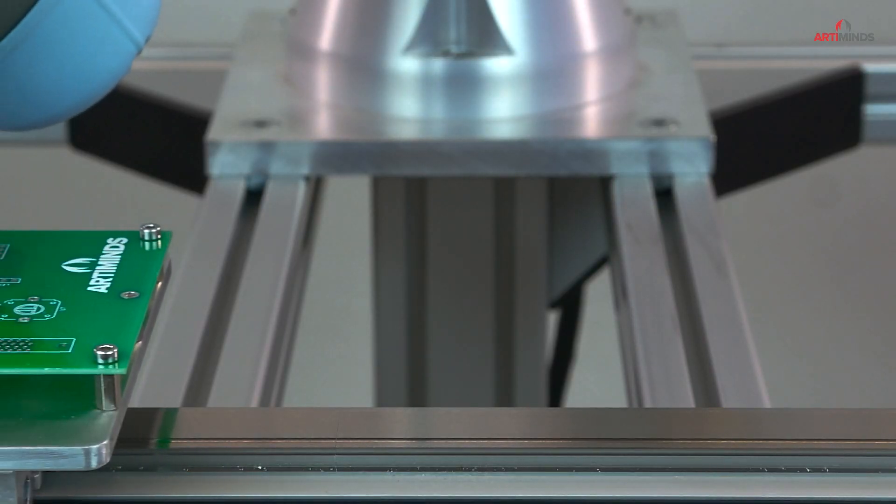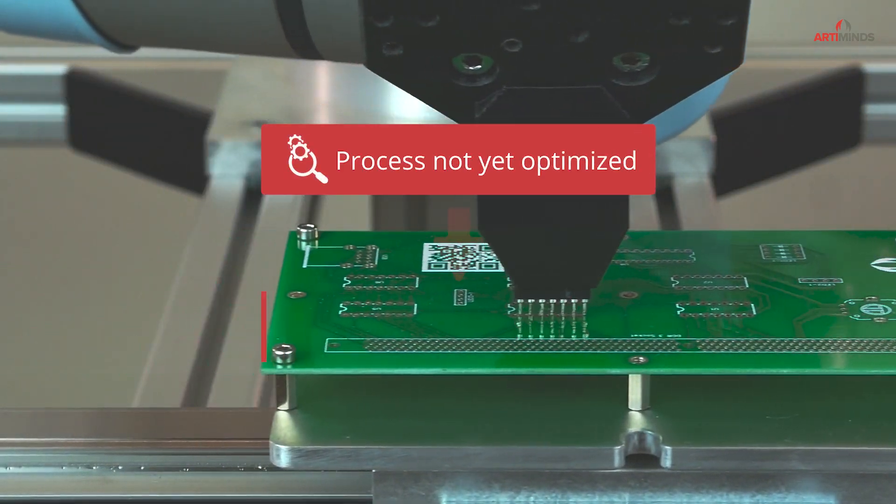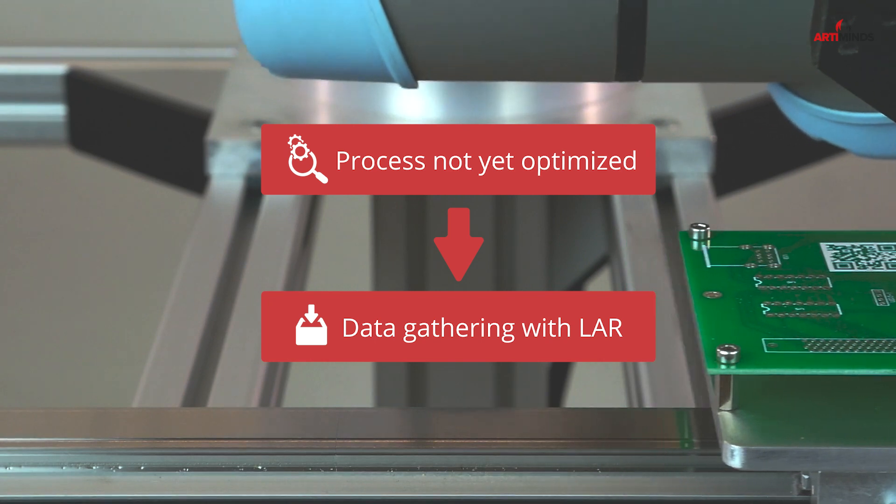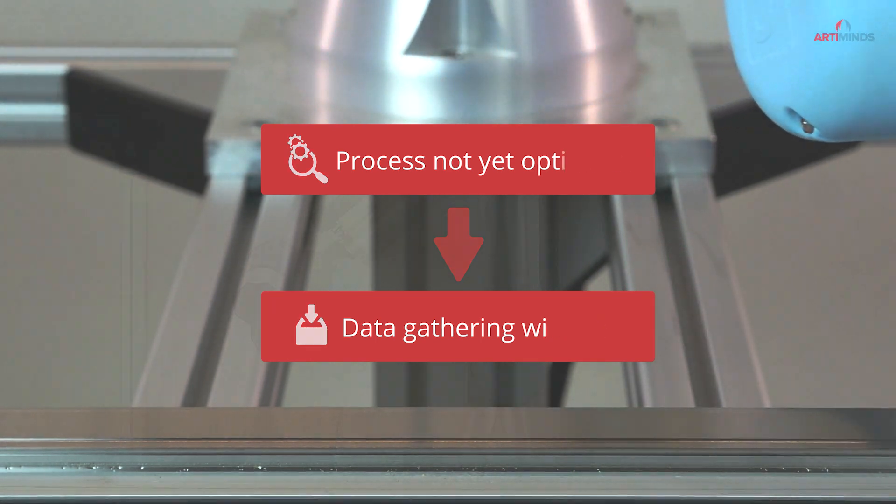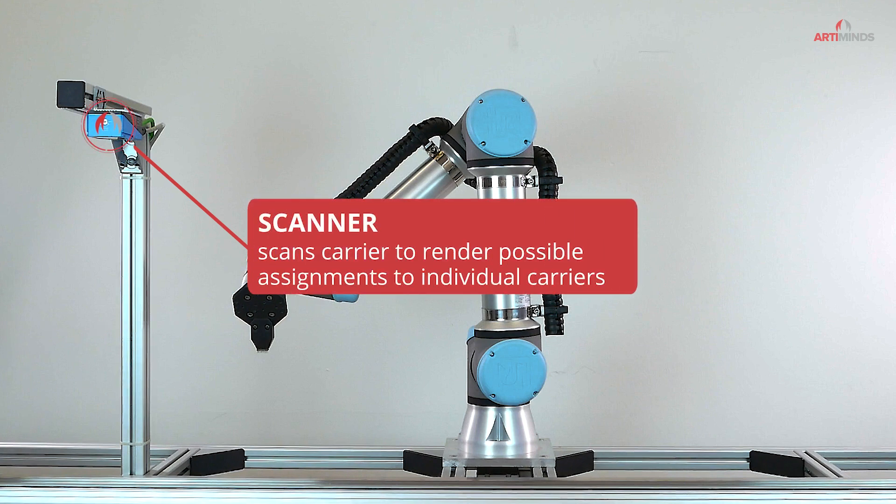In the initial production run, the process is not yet optimized and ArtiMinds LAR begins to gather data to lay the foundation for later data-driven optimization. Every carrier is scanned so that it is possible to assign the data to the individual carriers.